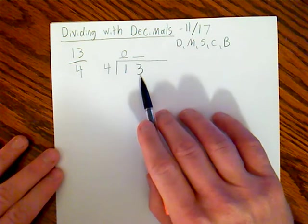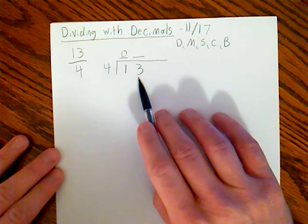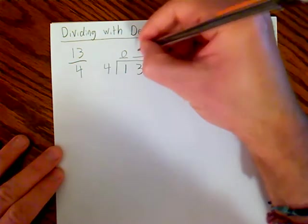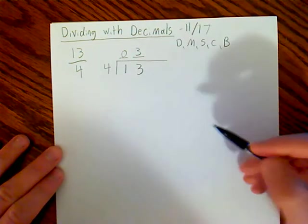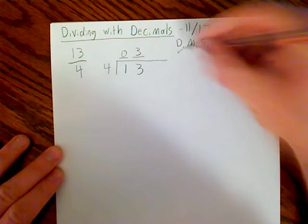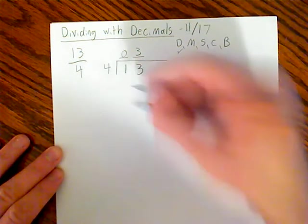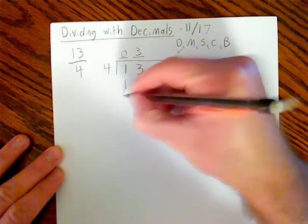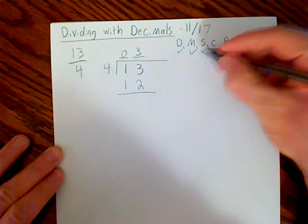Estimating how many times 4 goes into 13. Well, I know that 4 times 3 is 12, and remember we don't want to go over that number there, so 12 is going to be my magic number. So it goes in three times.